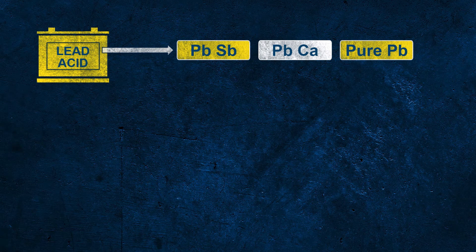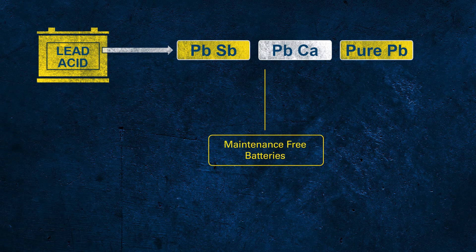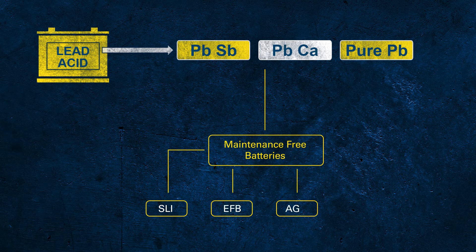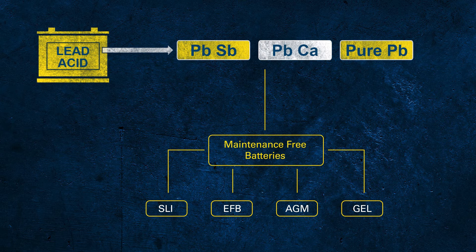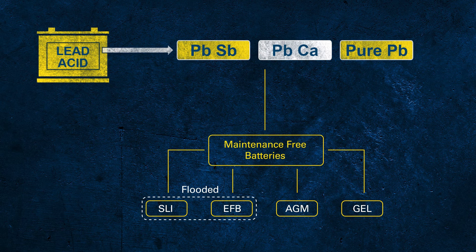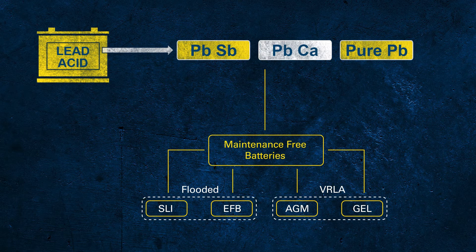Let's focus on the different battery types under the umbrella of maintenance-free batteries: SLI, EFB, AGM, and GEL. These different battery technologies can be divided into two subgroups — flooded batteries with fluid electrolyte, and so-called VRLA batteries with fixed electrolyte and valves inside. VRLA stands for valve regulated lead acid.